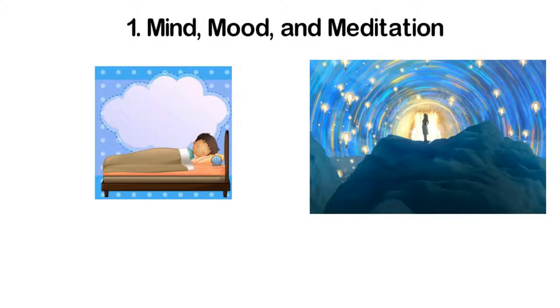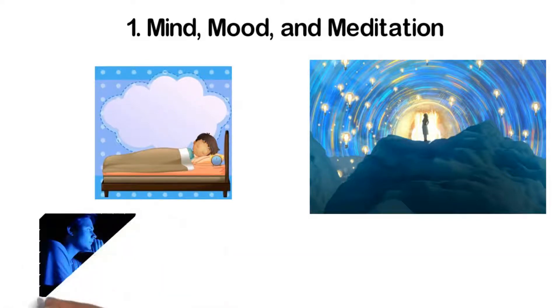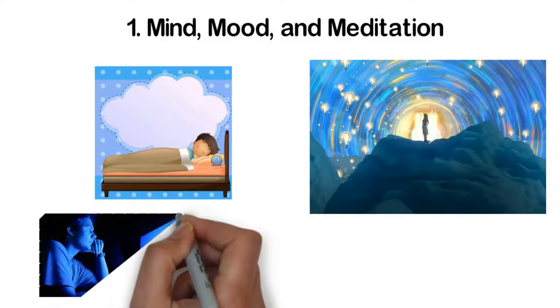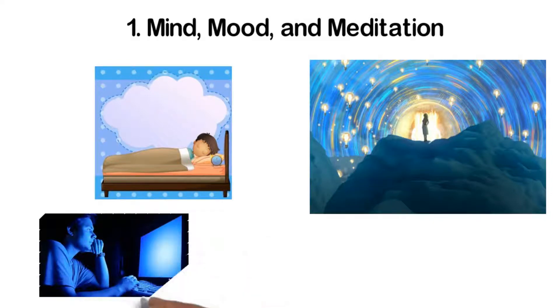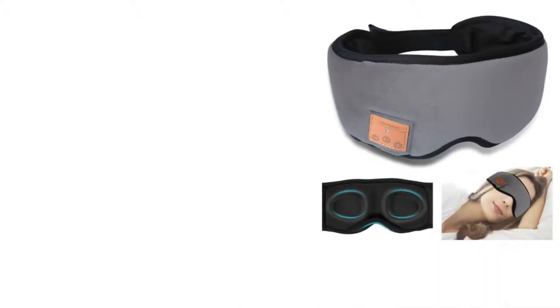Before bed, set aside all electronics at least half an hour before you sleep so that the blue light emitted from the screens doesn't affect the quality of rest that you get. If you are extra sensitive to light or sound, make sure that the blinds are shut tightly and maybe even consider using an eye mask and earplugs to block out any distractors.